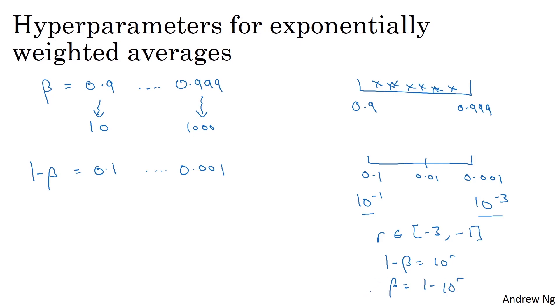And this becomes a randomly sampled value of your hyperparameter chosen on the appropriate scale. And hopefully this makes sense in that this way, you spend as much resources exploring the range 0.9 to 0.99 as you would exploring 0.99 to 0.999. So if you want a slightly more formal mathematical justification for why we're doing this, right? Why is it such a bad idea to sample on the linear scale? It is that when beta is close to 1, the sensitivity of the results you get changes even with very small changes to beta.